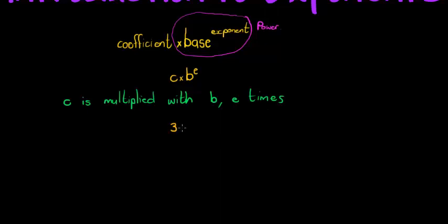So let's say we have 3 times 2 to the power of 4. And then I write that in a sentence and you'll see, C is multiplied with B, E times.